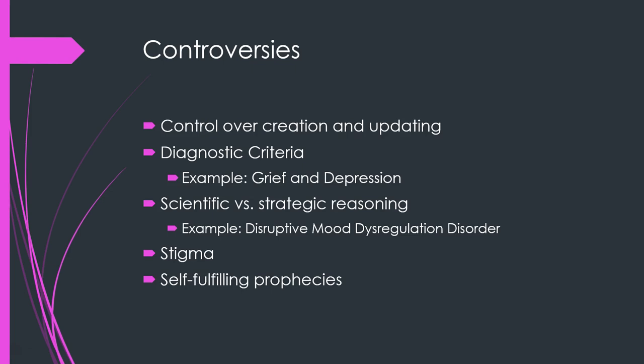There's also concern about stigma — if someone receives a diagnosis of a severe mental illness like schizophrenia, it can affect them if it's in their medical records and they want to join the military, police force, or CIA. There are also concerns about self-fulfilling prophecies, where once someone has a label they see it as part of their identity.